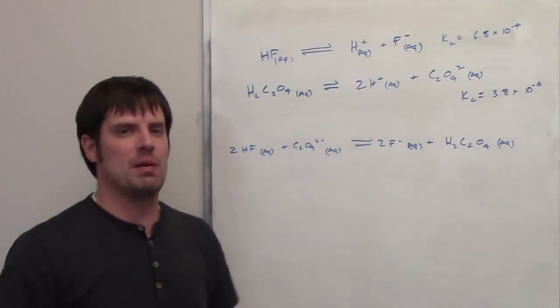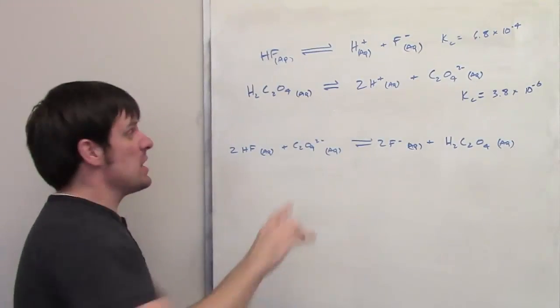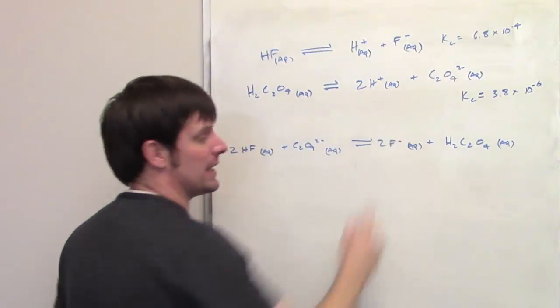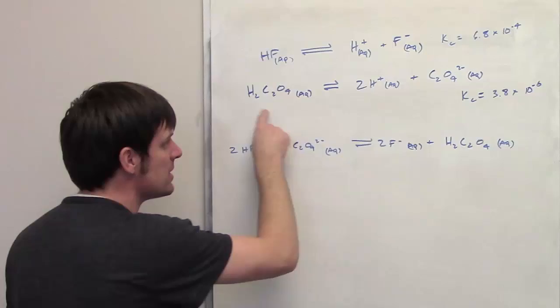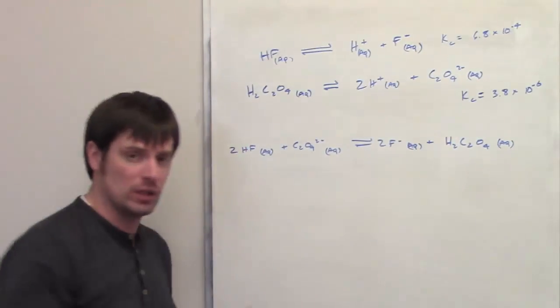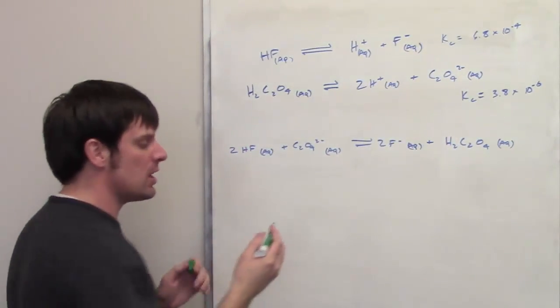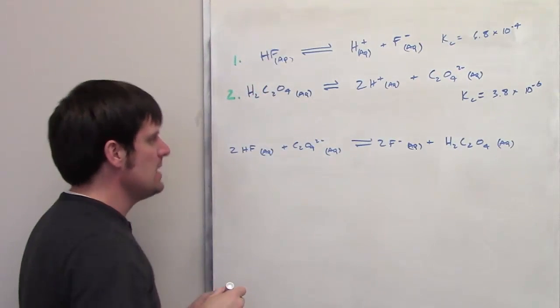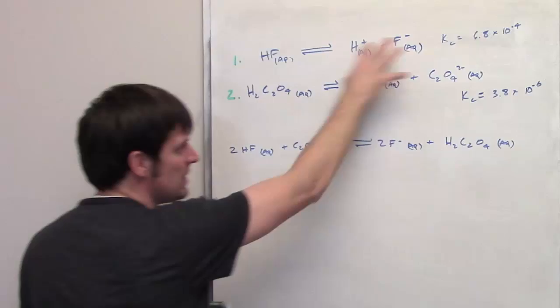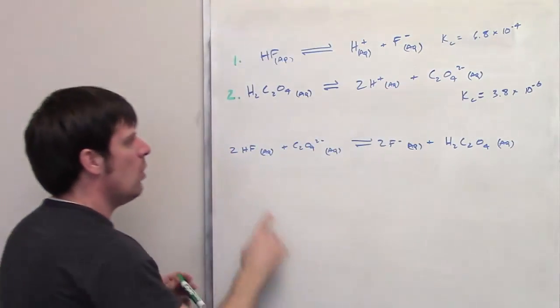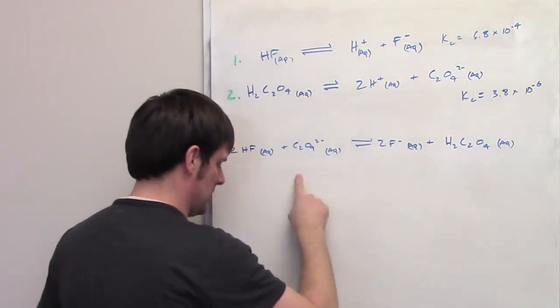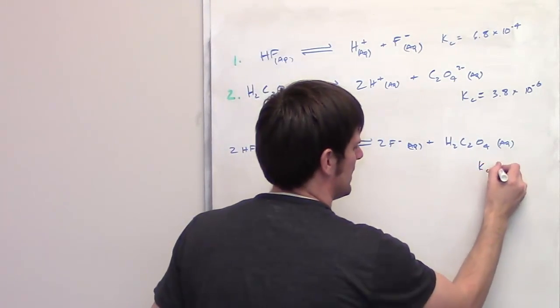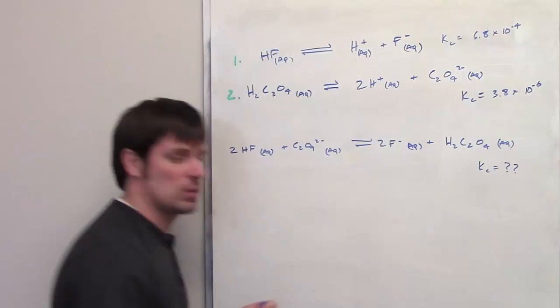This is a very fun problem. In it we are given these two equations, this one right here with the corresponding equilibrium constant value, and this one right here with its equilibrium constant value. I'm going to go ahead and number these equation 1 and equation 2. It then says, given this information up here, what is the overall equilibrium constant for this equation right here? So I'll write Kc equals what? That's what we're trying to find out.